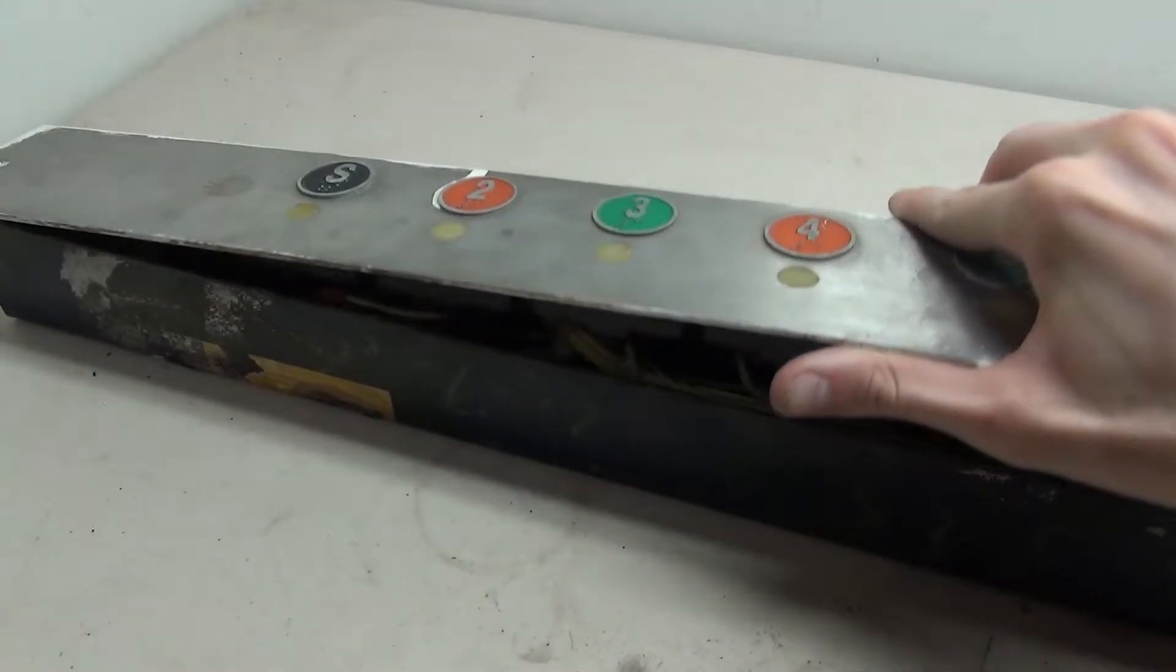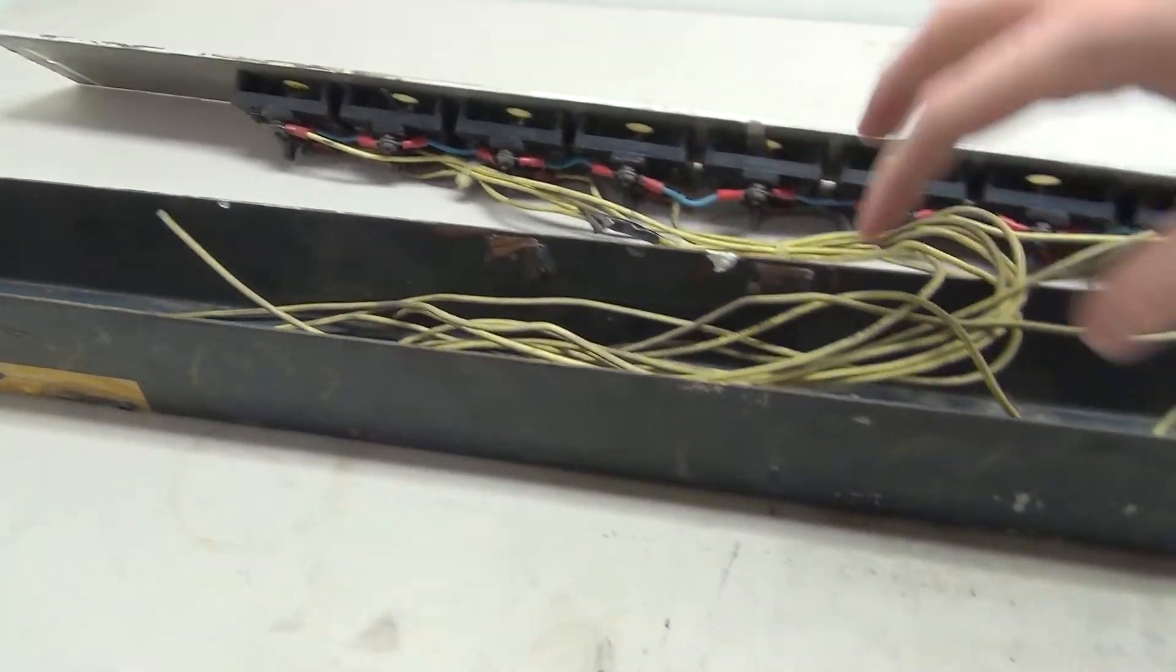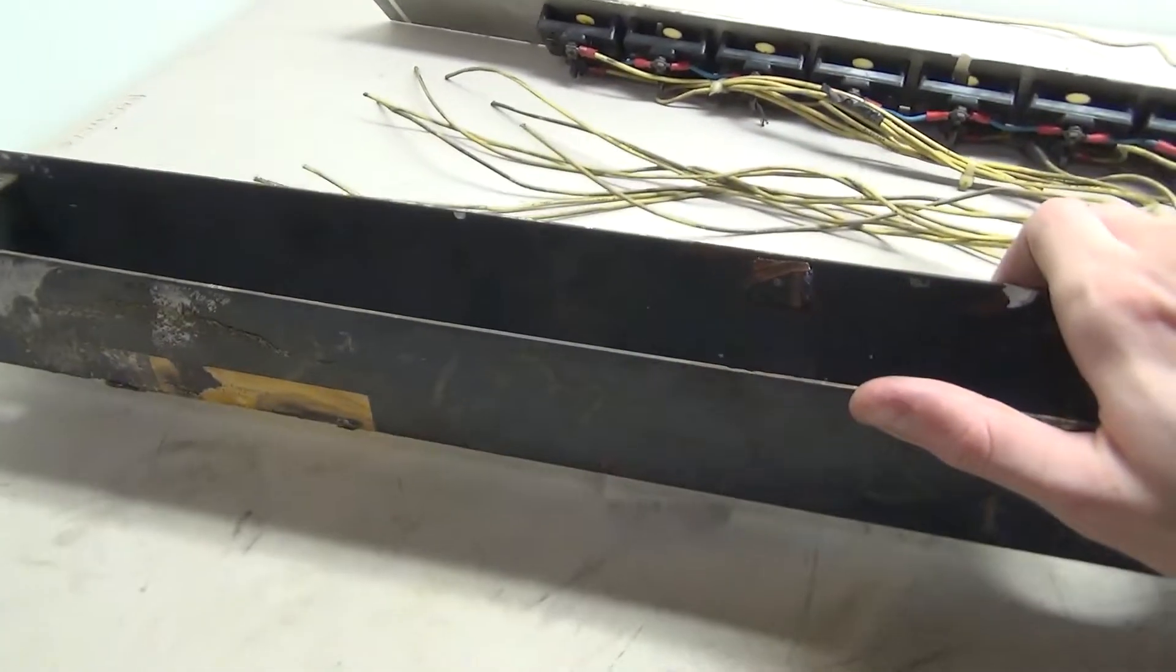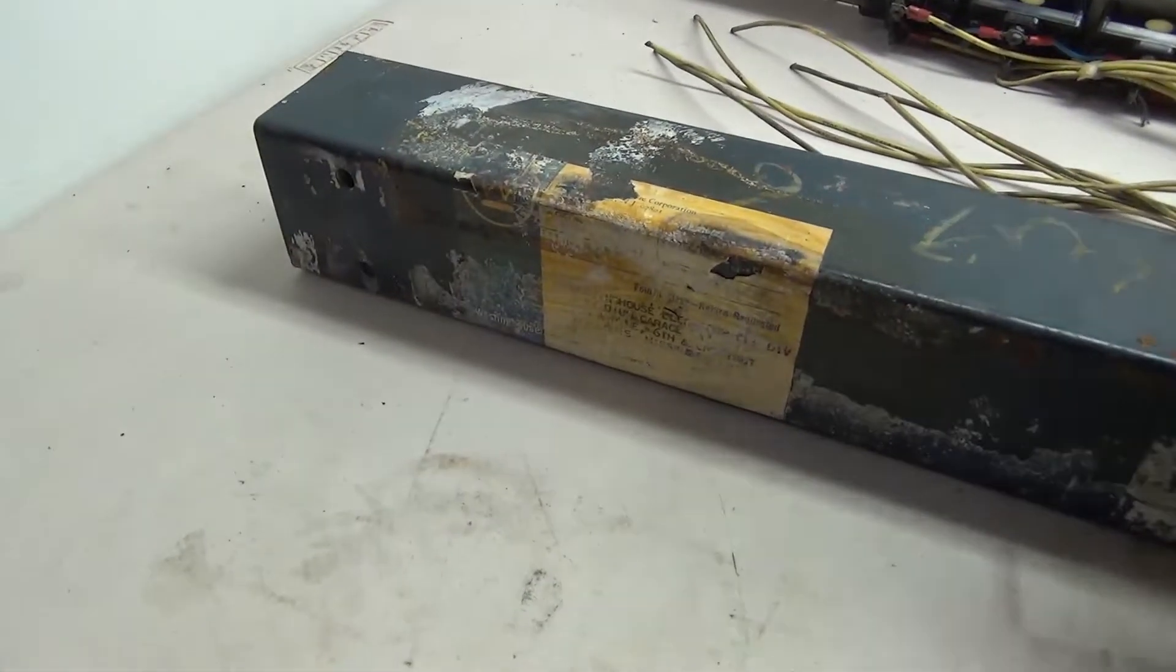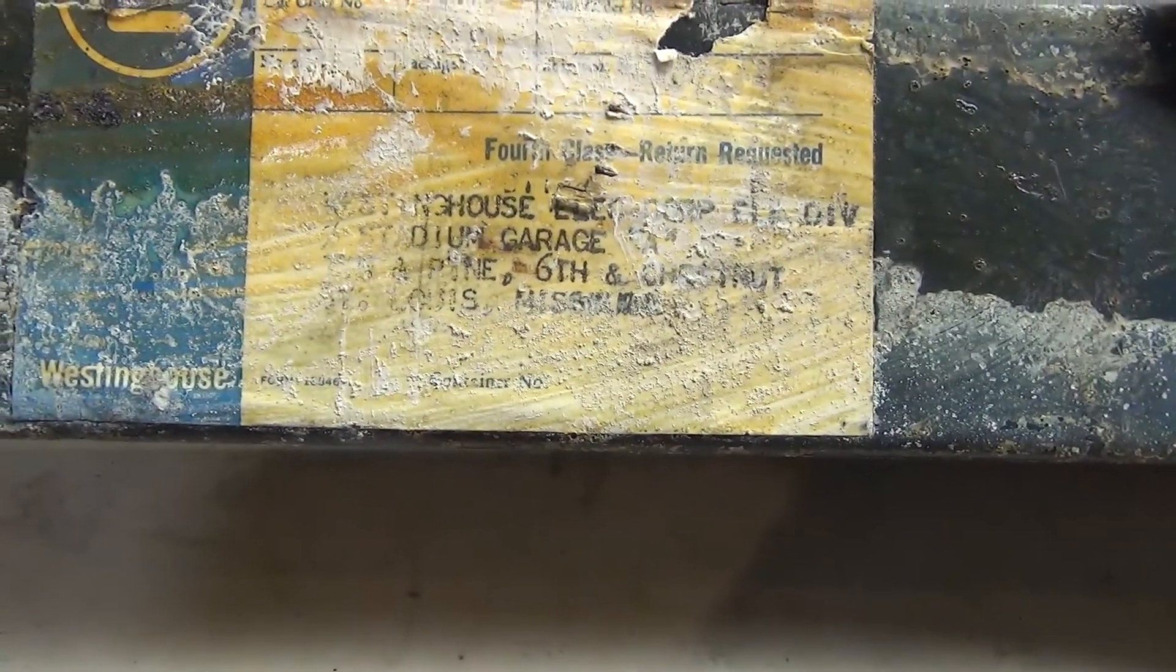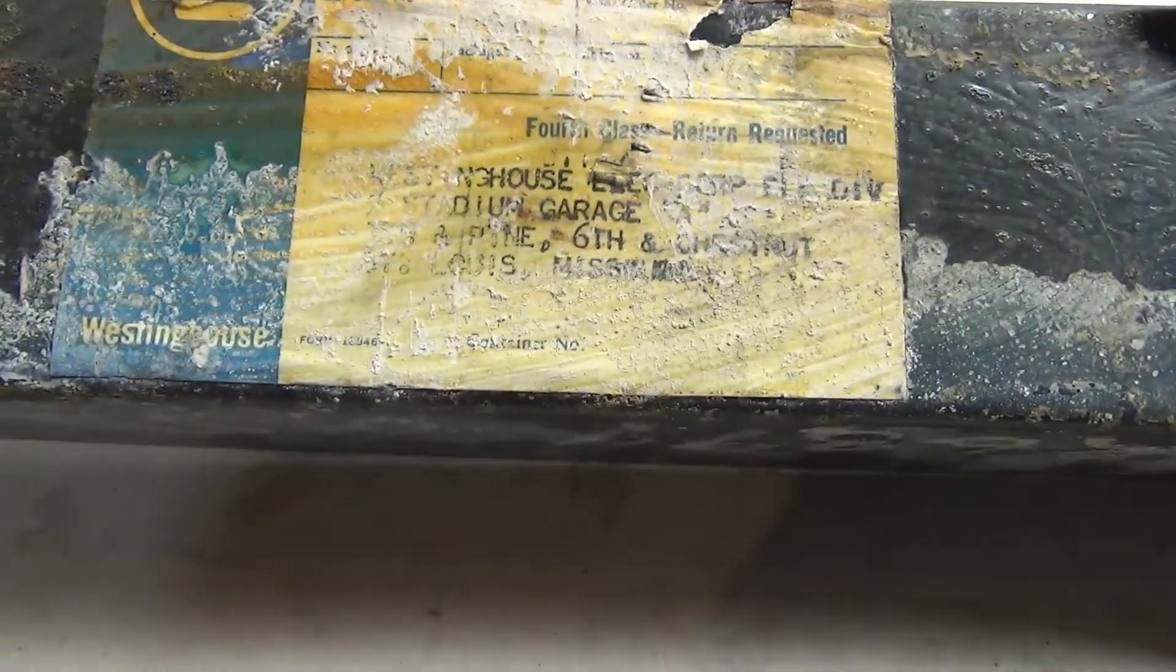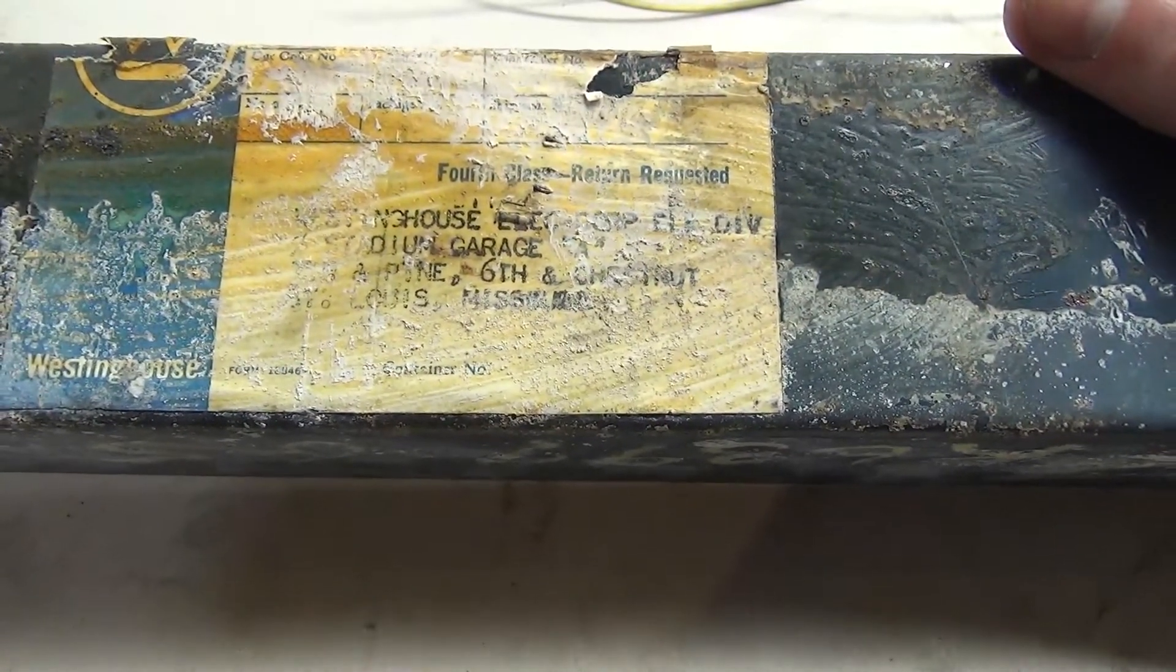We're going to go ahead and open this thing up, and this is what the back looks like. Let's pull all these wires out. Here's the box. This was the original back box that was in the wall. Something really interesting about this, if we turn this to the side, you'll notice this label. Look what it says. There's the Westinghouse logo, and you can see here Westinghouse Electric Corporation Elevator Division. This looks like it says Stadium Garage, 7th and Pine, 6th and Chestnut, St. Louis, Missouri.